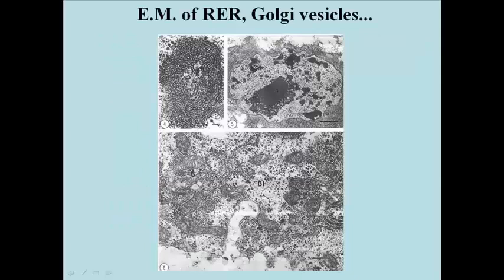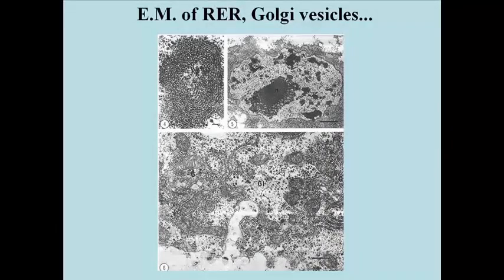The RER can assume a variety of shapes, like the whorled form at the upper left in this slide. The TEM at the upper right shows a nucleus surrounded by lots of RER, and the lower electron micrograph shows RER in the vicinity of Golgi vesicles.